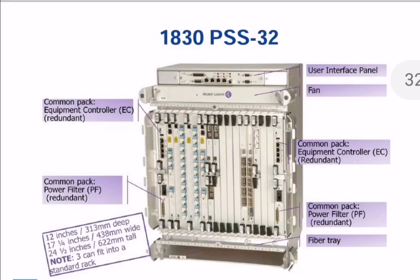Hello friends, this is the 1830 PSS-32 Nokia DWDM. As you have seen, the first panel is the user interface panel, the second one is the fan, the third one is the equipment controller card, and the fourth one is the power filter. At the last, you have seen the fiber tray, and in the fiber tray the fibers have been routed properly.